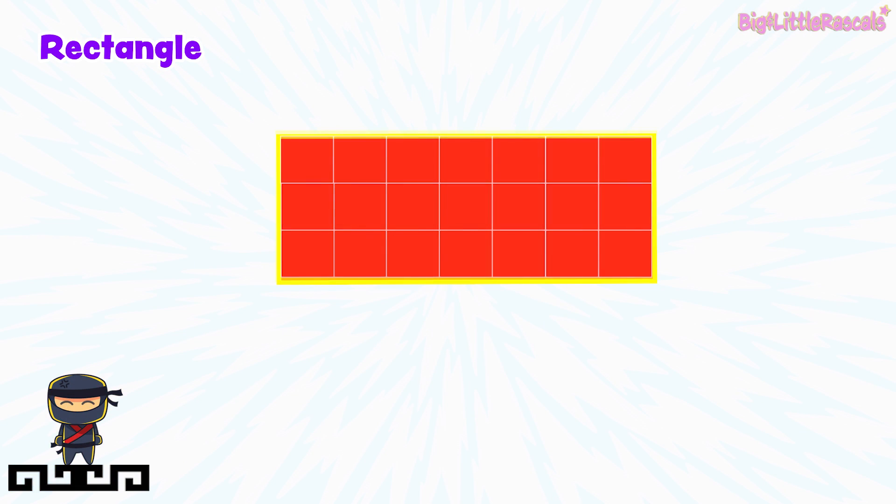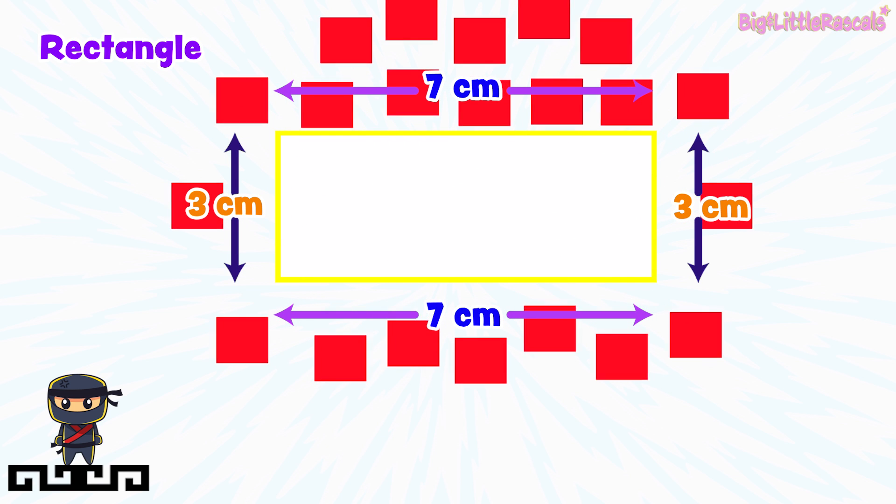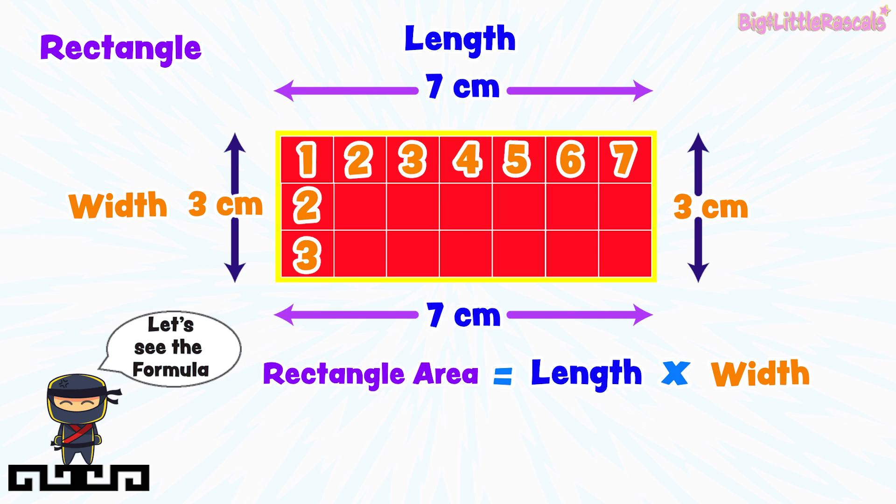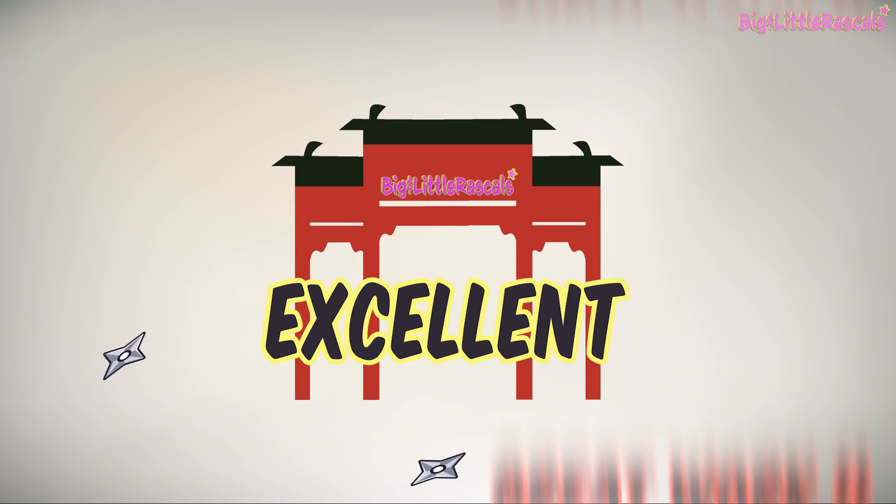Now, what is the area of a rectangle? Do you know? Let's see the formula. Rectangle area equals to length multiplied by its width. Rectangle area equals to 7 cm multiplied by 3 cm equals to 21 square cm. Don't forget the square unit sign at the end. 21 square cm. Awesome! Excellent everyone! Great work!